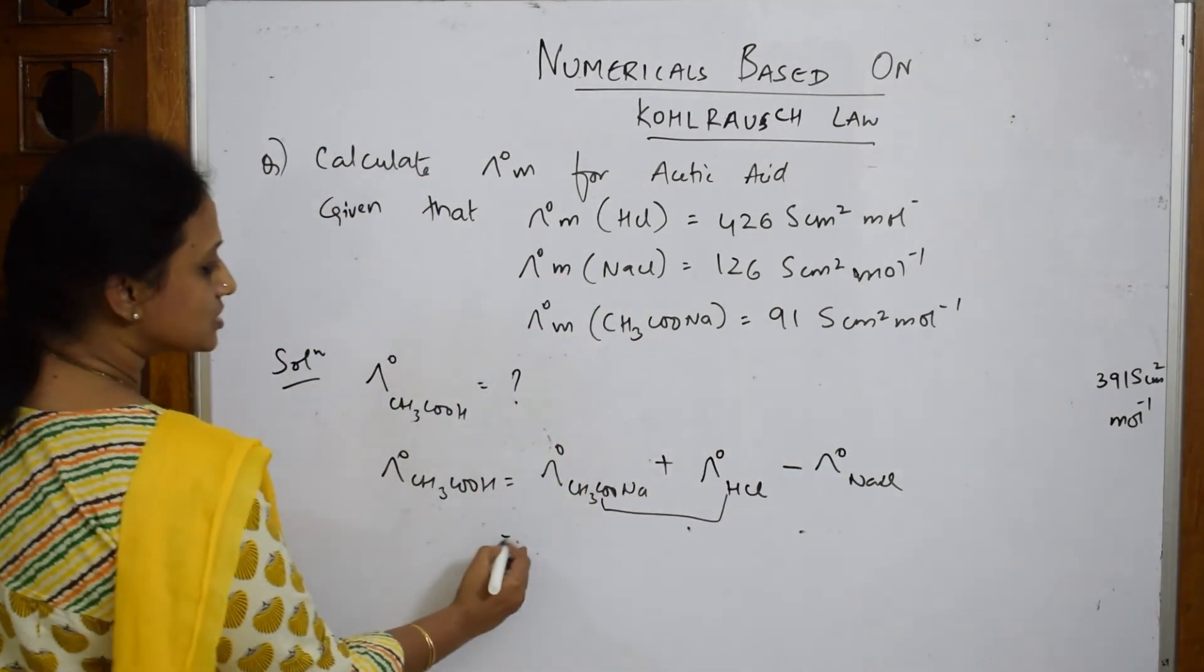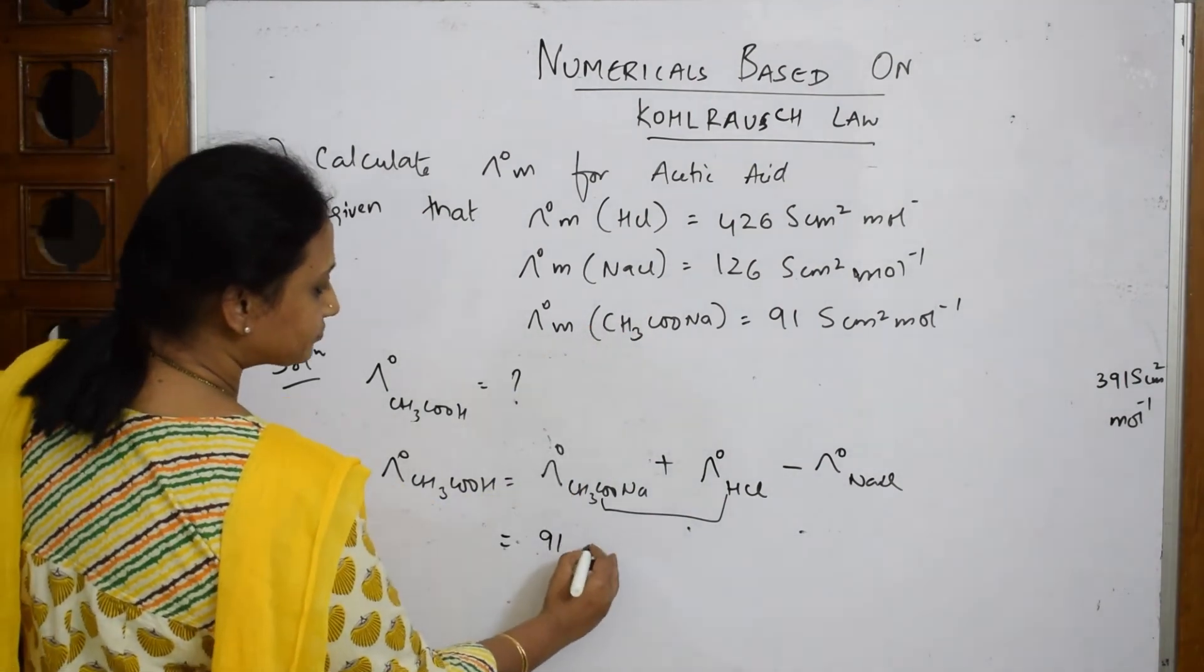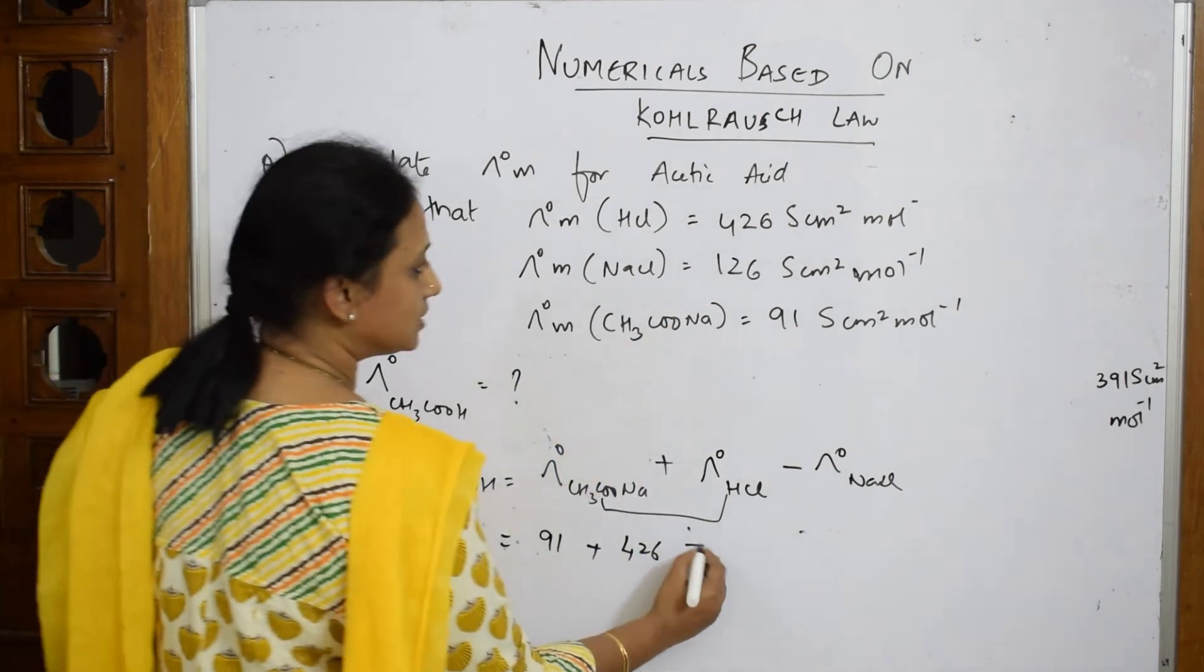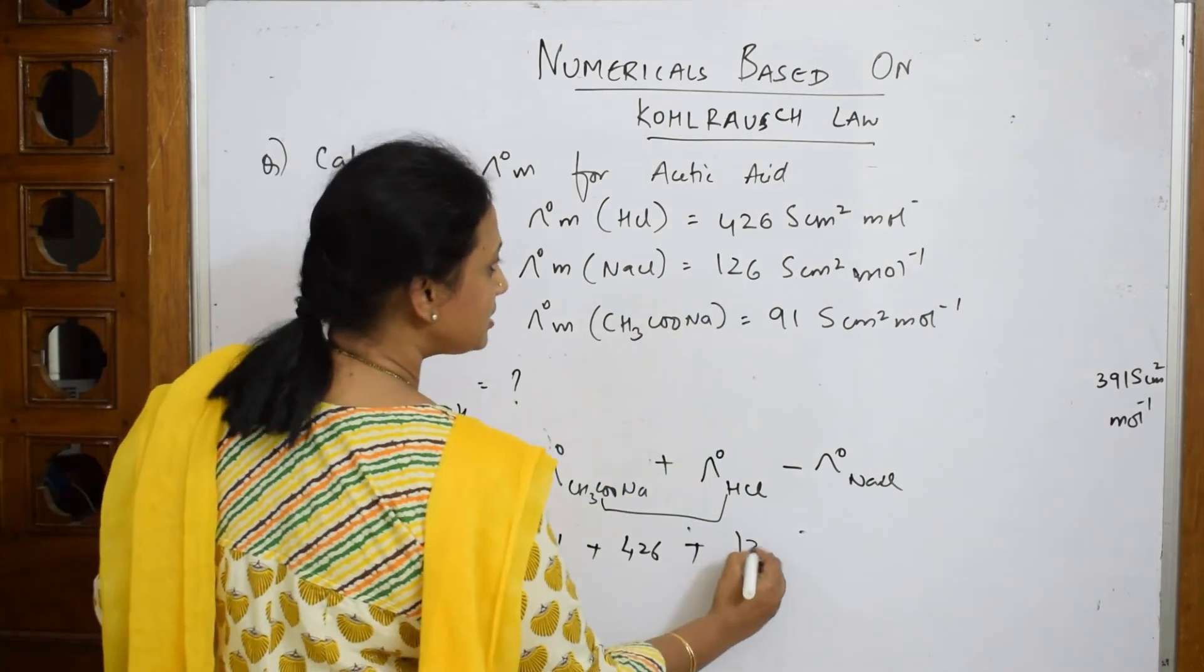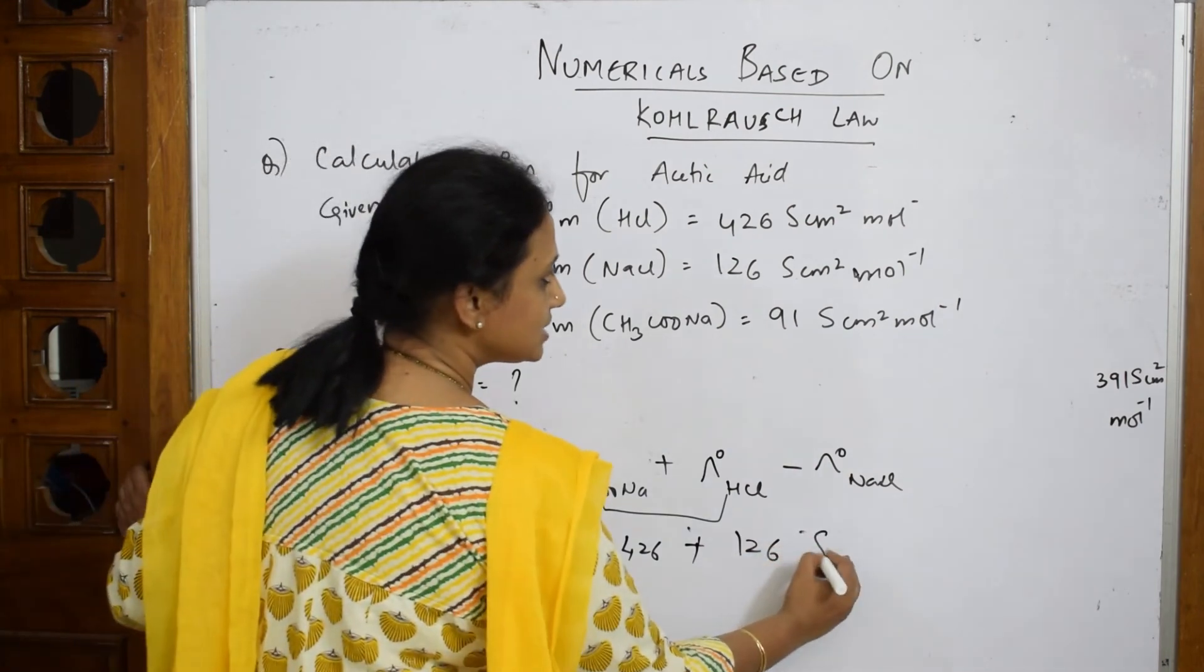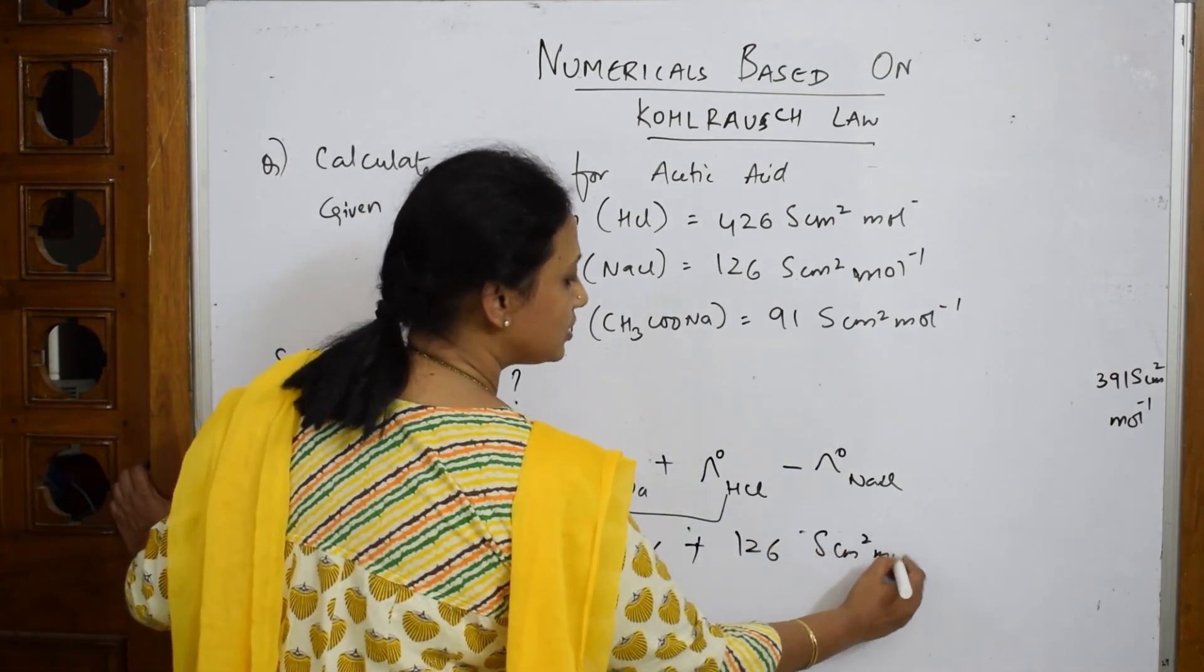Substitute the values now. Acetate, how much did they give me? 91 plus HCl, how much did they give me? 426. And NaCl, how much did they give me? 126. So everything in Siemens. I'm going to place. I'm writing the units here. Siemens cm² mole inverse.